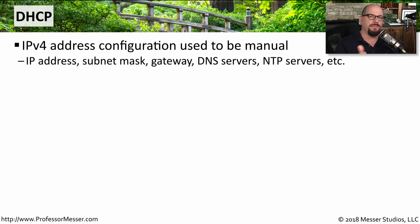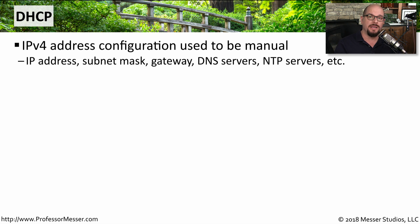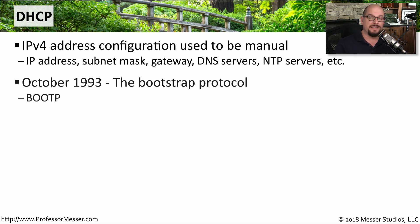In the early days of IP version 4, we would have to go from workstation to workstation to manually configure all of the IP configuration details, such as the IP address, the subnet mask, the default gateway, DNS servers, NTP information, and anything else related to the overall configuration of IP. Obviously, this manual configuration process did not scale very well.